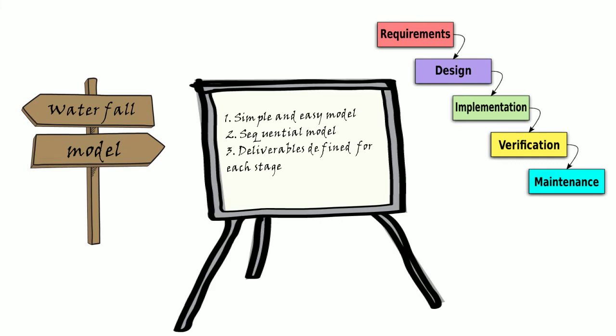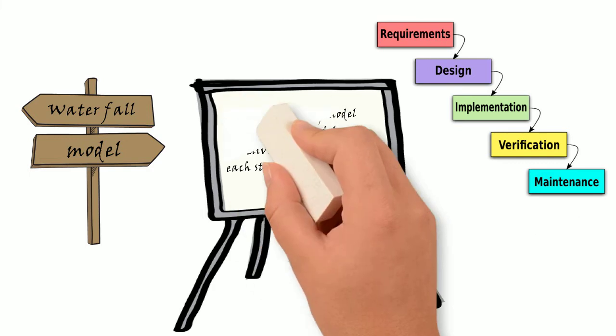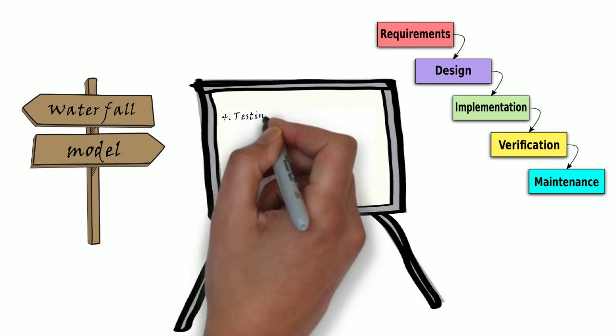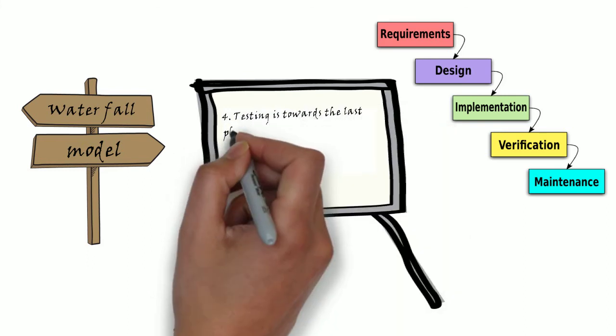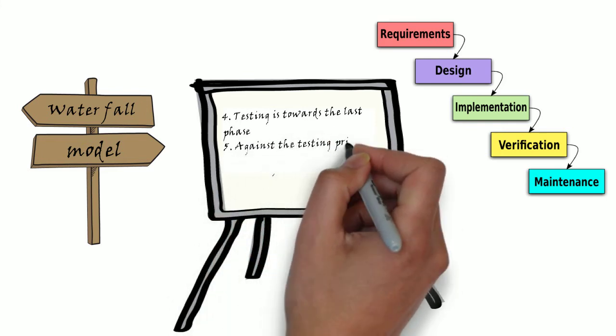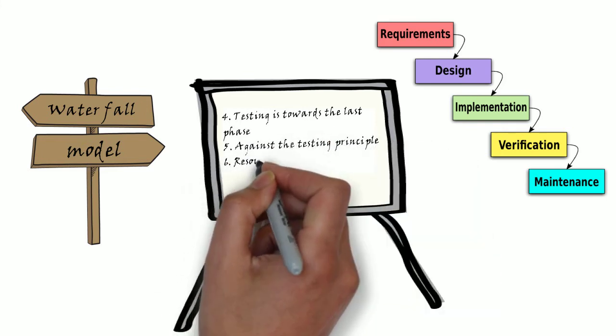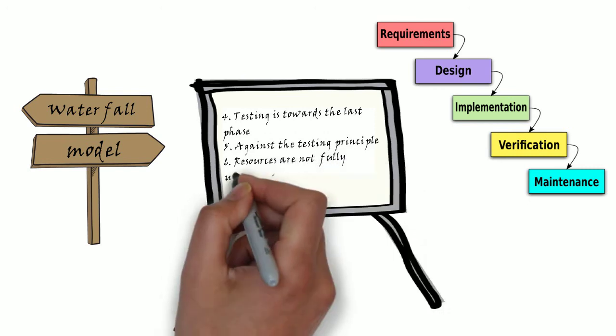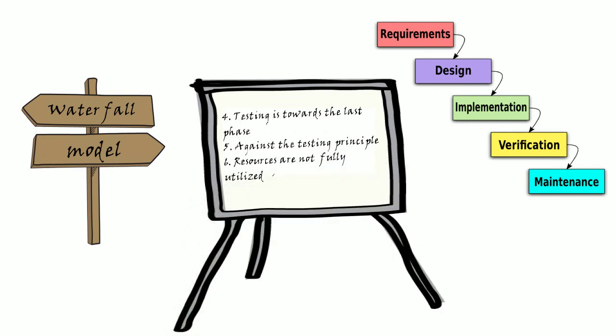The main disadvantage is it's a sequential model. The testing is towards the last phase and finding of defects would be at the last moment, and this can be a problem since cost of fixing the defect would be more. Also, if requirement changes at the last point, it's very difficult to go back and make changes in the system.